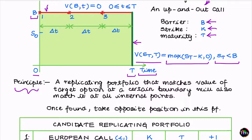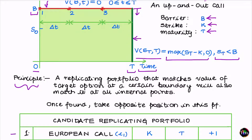To replicate this payoff along the green boundary, all I need to include in my replicating portfolio is a European call option of strike K — the same as the strike of the up-and-out call — and maturity T. I need one unit of this option, or equivalently, a number equal to the number of up-and-out calls being risk managed. If you are risk managing 10,000 up-and-out calls, you would require 10,000 European calls of the same strike and maturity.